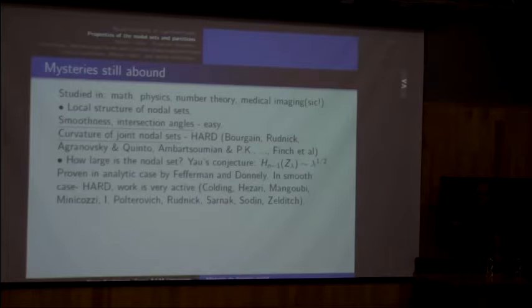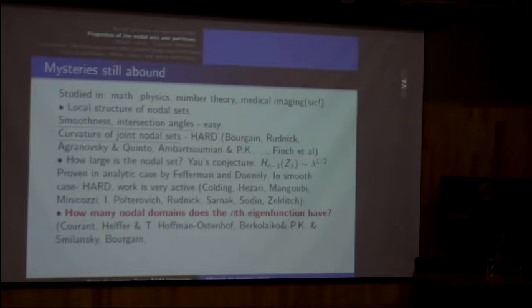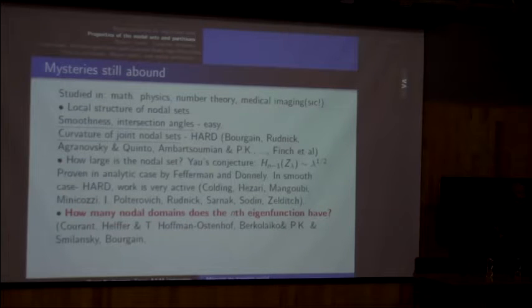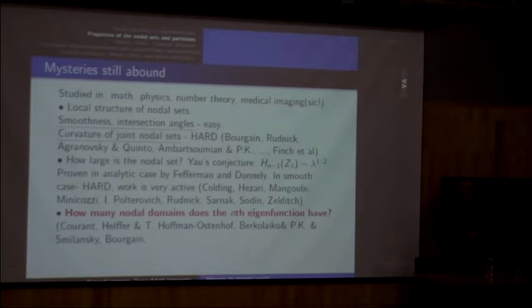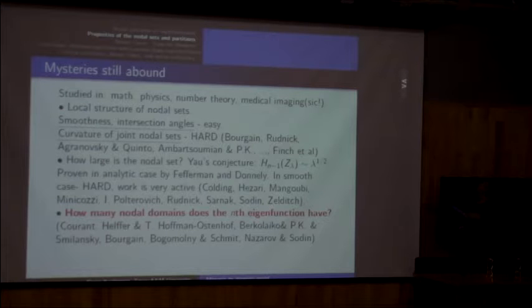Many prominent names appear in this area: Peter Sarnak, Rudnick in number theory, Zelditch in analysis, and many others. Now, the main focus: the red question — how many nodal pieces can an eigenfunction have? The rule of thumb is that the higher the pitch (the larger lambda), the more nodal pieces you see. But we saw counterexamples, and this is a very active area, with contributions from both mathematicians and physicists.